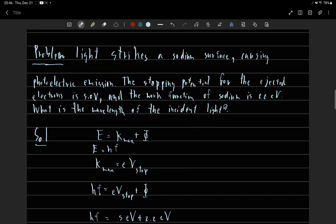Light strikes a sodium surface causing photoelectric emission. The stopping potential for the ejected electrons is 5 volts and the work function of sodium is 2.2 electron volts. What is the wavelength of the incident light?